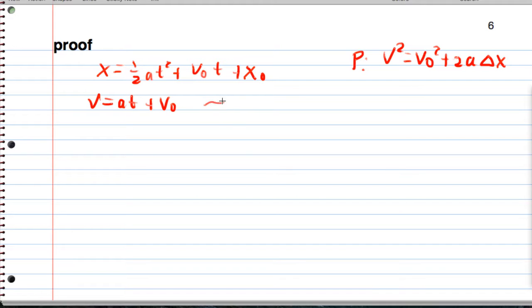So let's begin by isolating. We have t is v minus v naught over a, and that's what we're going to substitute into here. So we're going to have x equals one-half times a times v minus v naught over a squared, plus v naught times v minus v naught over a, plus x naught.